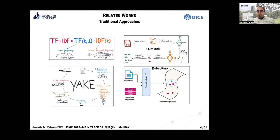Embedding approaches can also be used here. For example, EmbedRank embeds the document and candidate keyphrases together in one semantic space, then finds output keyphrases by cosine similarity to identify the most similar candidate keyphrases to the document in that semantic space.